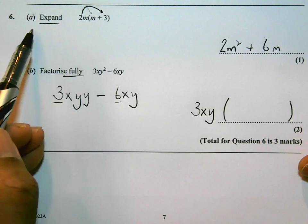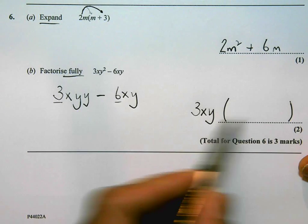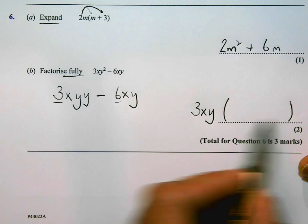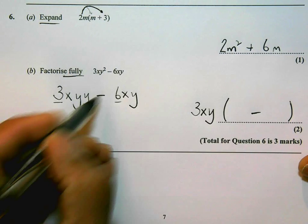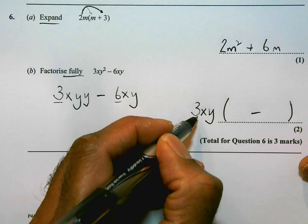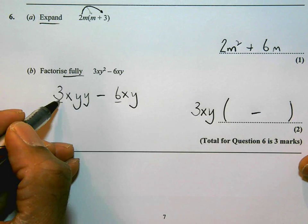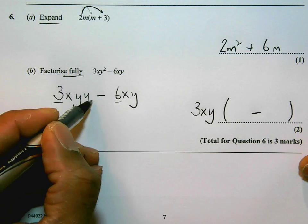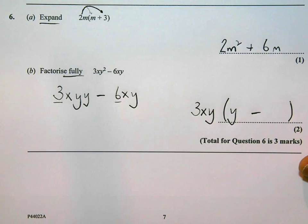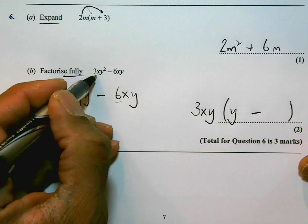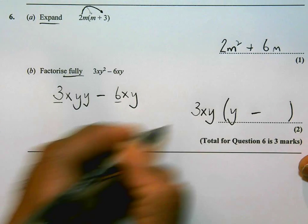And now I'm going to do exactly what I did in part A. Try to multiply out or think about what should be inside the brackets. So when I multiply it out, I get this as an answer. There will be a minus in the center because there's a minus here. 3xy times what will give me 3xy squared. So I basically need a y there. So 3xy times y will be 3xy squared.